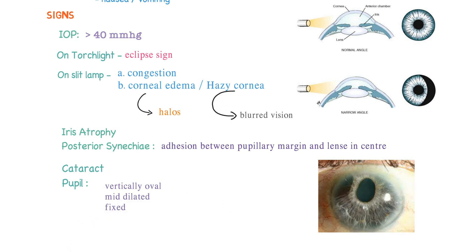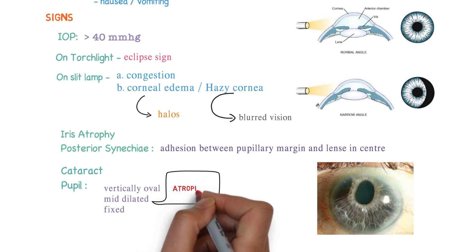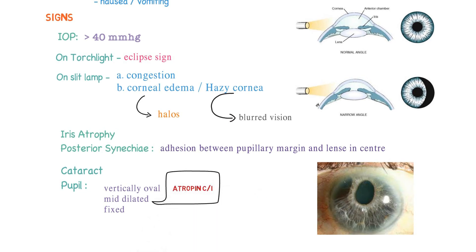Now a simple question: should we give atropine to this patient? Obviously no. Why? Because the pupils are already mildly dilated. Therefore atropine is contraindicated in this condition — remember that.